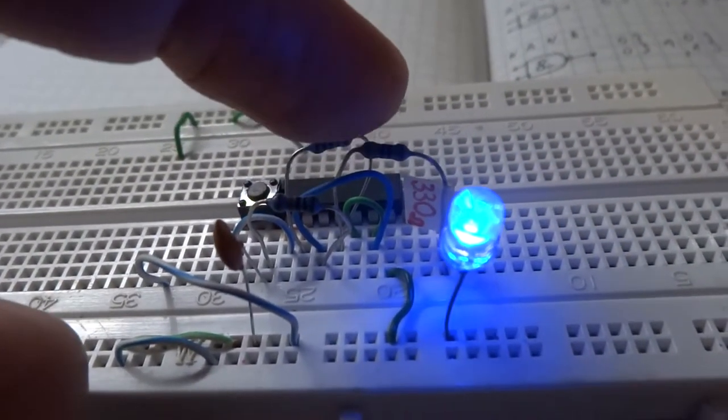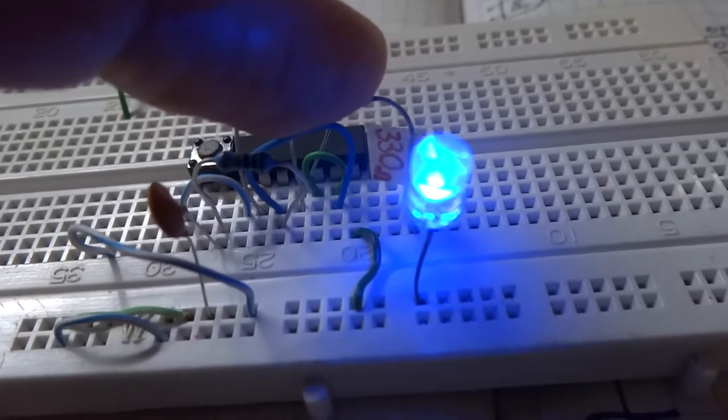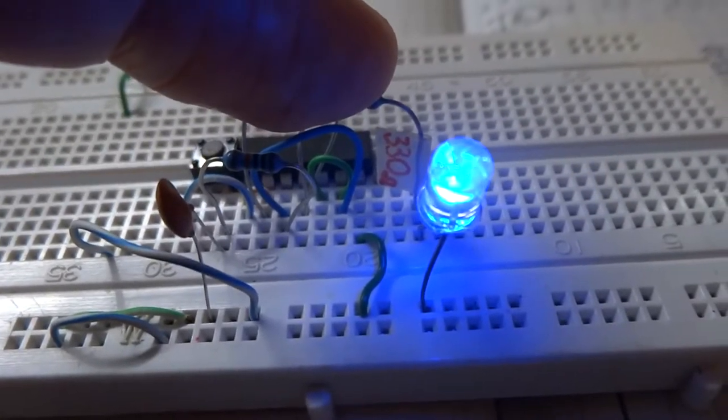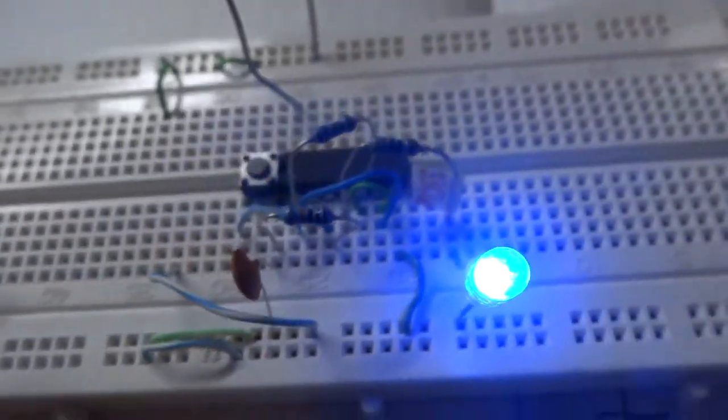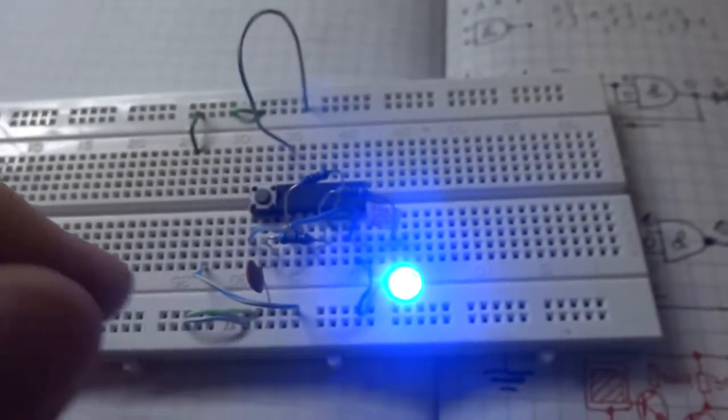Here is the output, 330 ohms and LED, this blue LED. So this is a memory cell.